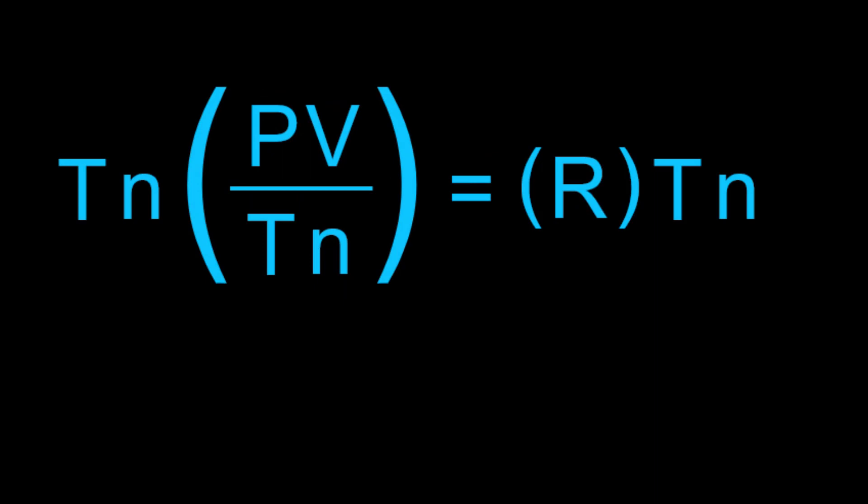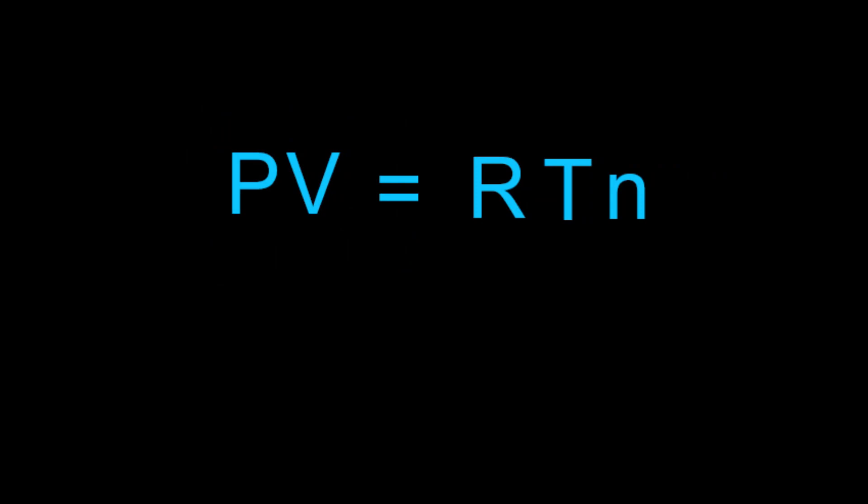So if we multiply both sides by TN, then TN cancels on the left and we are left with PV equals RTN, which by convention is stated as PV equals NRT, or PIVNRT for short.